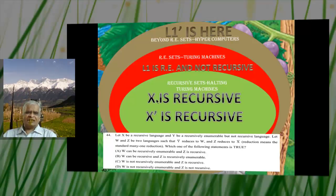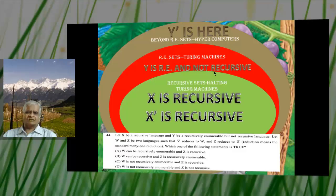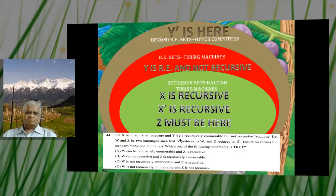X is given as recursive, so its complement is automatically recursive. Y is given as RE and not recursive, so Y complement lies outside RE. Since Z reduces to X complement, and X complement is recursive, Z must also be recursive — it is placed in the recursive region.